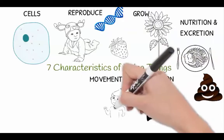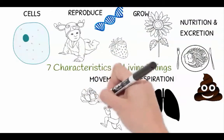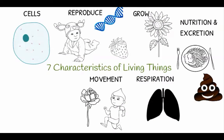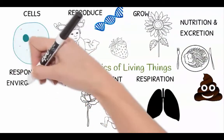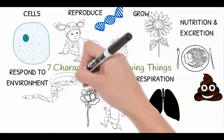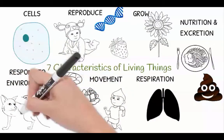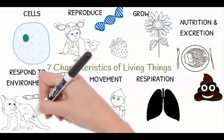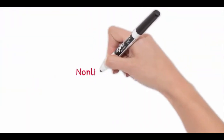All living things move. This may seem funny when thinking about plants, but even plants have the ability to track the movement of the sun. All living things also have the ability to respond to the environment — to detect changes in their surroundings. Living things can react to things such as light, temperature, smell, sound, heat, and water, and they are able to react in response to danger, such as a predator.